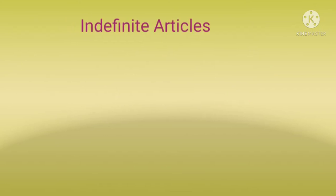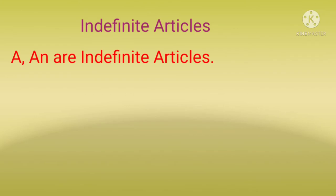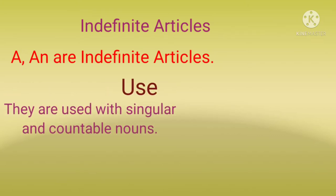So students, today we will do indefinite articles. So what are indefinite articles? As I told you earlier, a and an are called indefinite articles. So what are their uses? They are used with singular and countable nouns. Countable nouns means जिसे हम count कर सकते हैं, and singular means किसी एक चीज़ के लिए — we use a or an article.